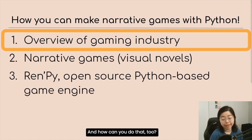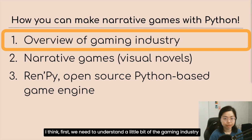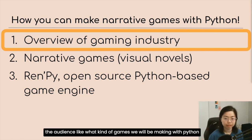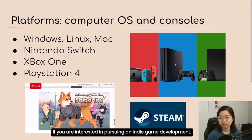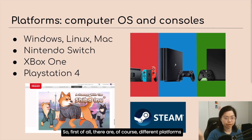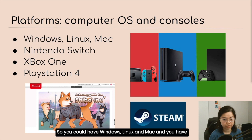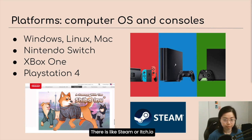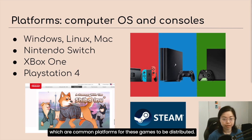How did I do that and how can you do that too? First we need to understand the gaming industry — what kind of games we'll be making with Python with this particular open source engine, and what other options there are if you're interested in pursuing indie game development. There are different platforms you might be familiar with: computer OSes and consoles — Windows, Linux, and Mac — and Nintendo Switch, Xbox One, and PlayStation 4. On the PC side, there are platforms like Steam or itch.io where these games are commonly distributed.